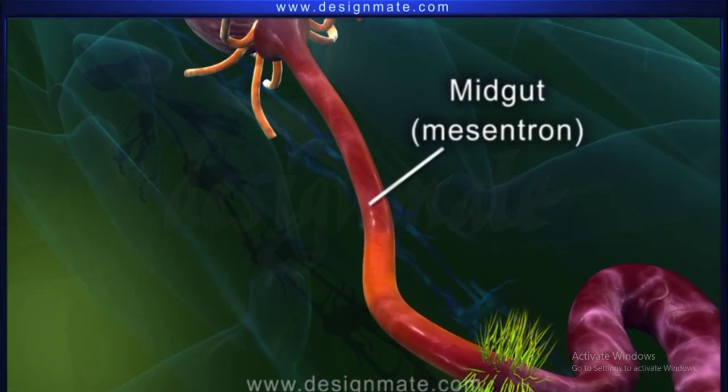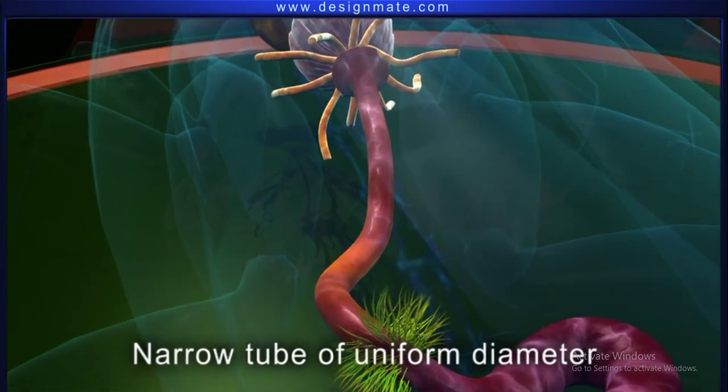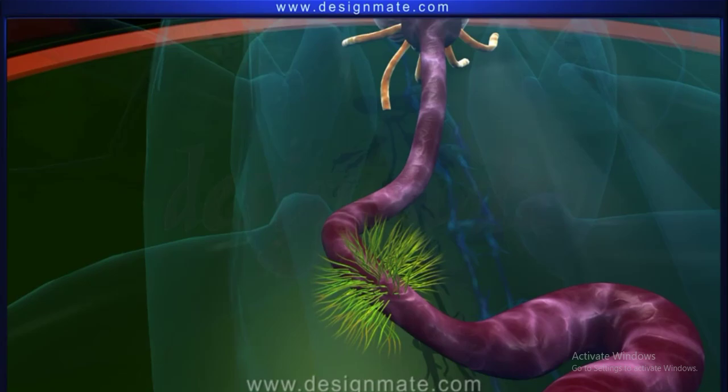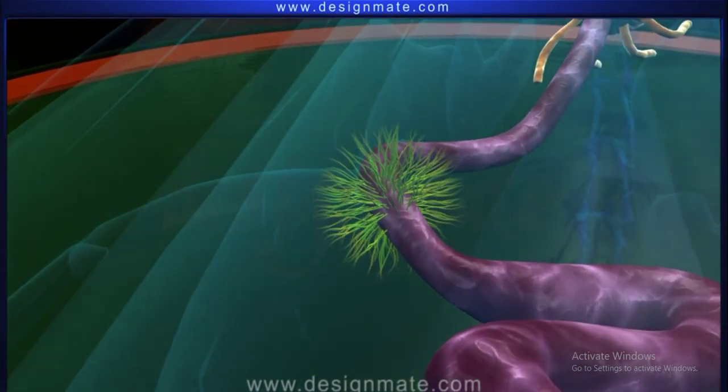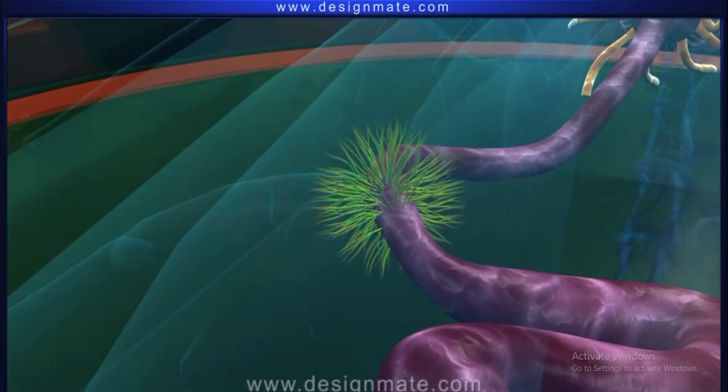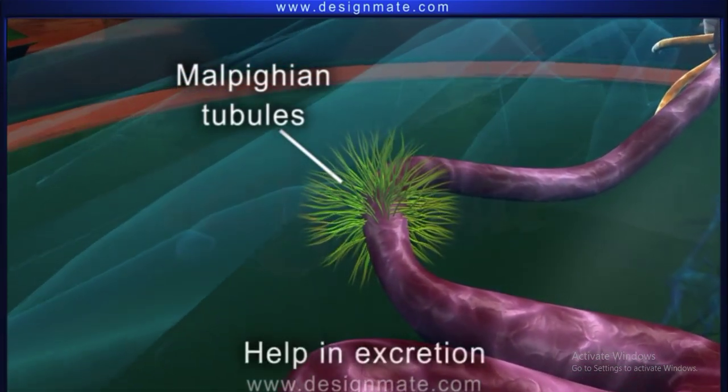The midgut or mesenteron is a narrow tube of uniform diameter. At the point where the midgut opens into the hindgut, a number of thin yellowish tubules are found. These are the Malpighian tubules which help in excretion.